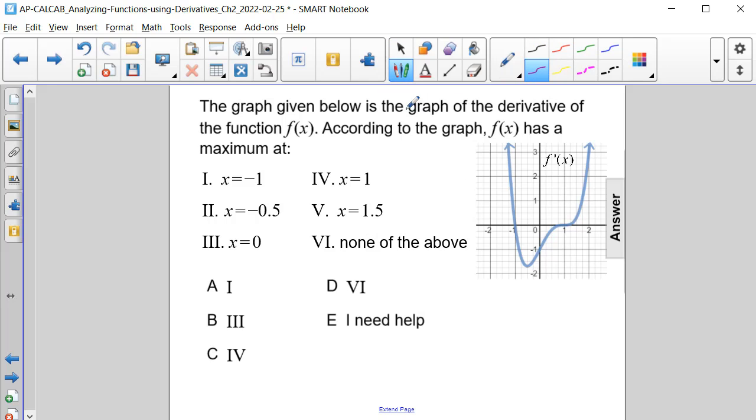Well, a maximum occurs when you go from increasing to decreasing. So f prime of x being positive to f prime of x being negative.